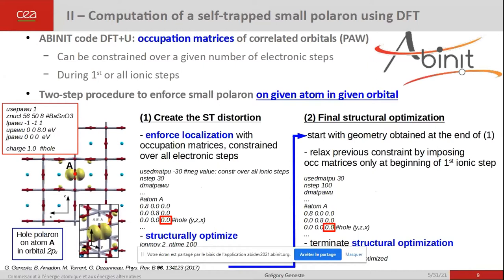Fortunately, Abinit has a powerful functionality related to DFT+U. It is possible to constrain, over a given number of electronic steps — either at the first ionic step or at all ionic steps — the occupation matrices of the correlated orbitals. Thus, you can impose at the beginning of your calculation on which atom and in which orbital you put your additional electron or hole.